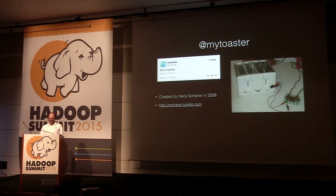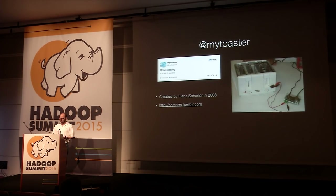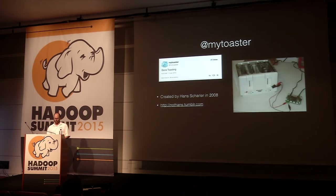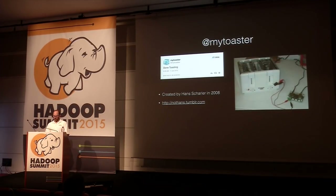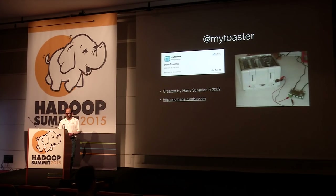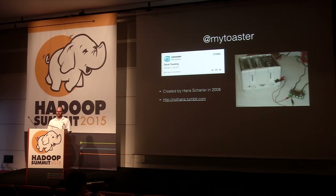It uses the Twitter API to tweet its status when it's toasting or finished toasting. It's cool from a hacker perspective, but is it lucrative? Probably not. I can think of many ways to make — or perhaps more importantly save — money based on remotely monitoring the status of a toaster. But the point is that it's becoming increasingly easy to network or internet-enable devices as mundane as a toaster, and it's not a stretch to apply the idea to business use cases at scale.